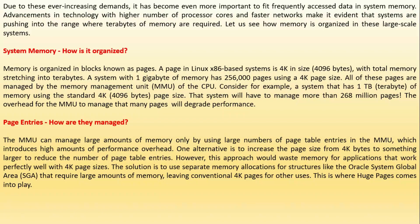The MMU can manage large amounts of memory only by using a large number of page table entries, which introduces high amounts of performance overhead. One alternative is to increase the page size from 4KB to something larger to reduce the number of page table entries. However, this approach would waste memory for applications that work perfectly well with 4K size pages. The solution is to use separate memory allocation for structures like the Oracle SGA that require large amounts of memory, leaving conventional 4K pages for other uses. This is where huge pages comes into play.